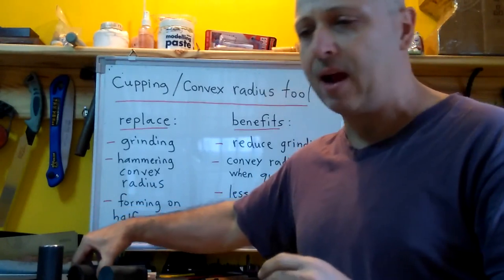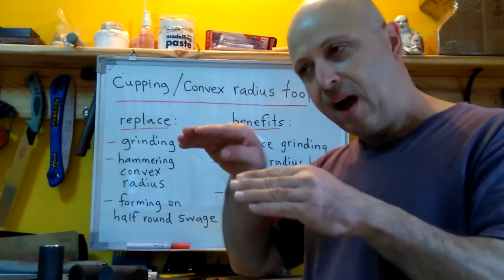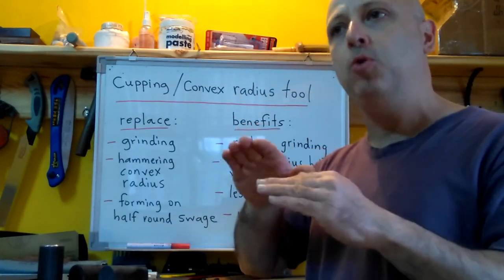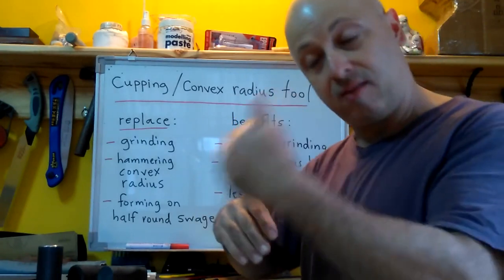For me personally, for a general purpose hammer I like to have, you know, it has to be convex in order to move metal but not too convex that it becomes almost like a rounding hammer or taking it a step further maybe towards like a ball peen end.